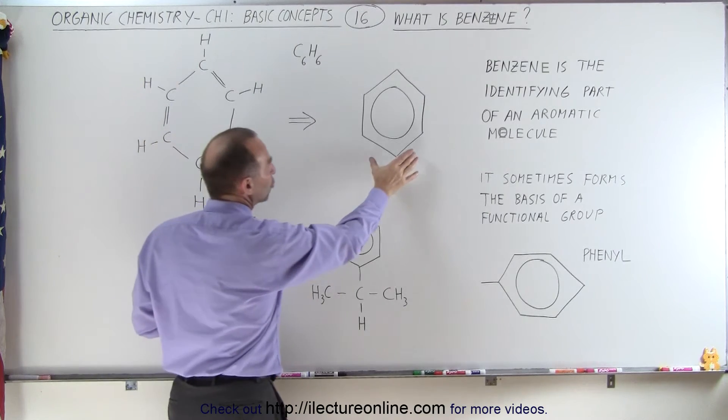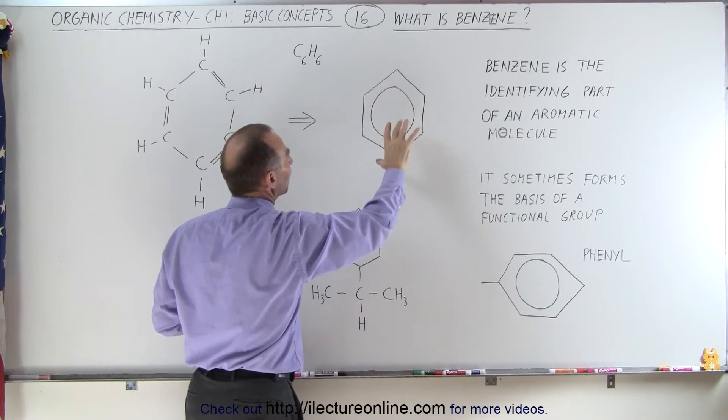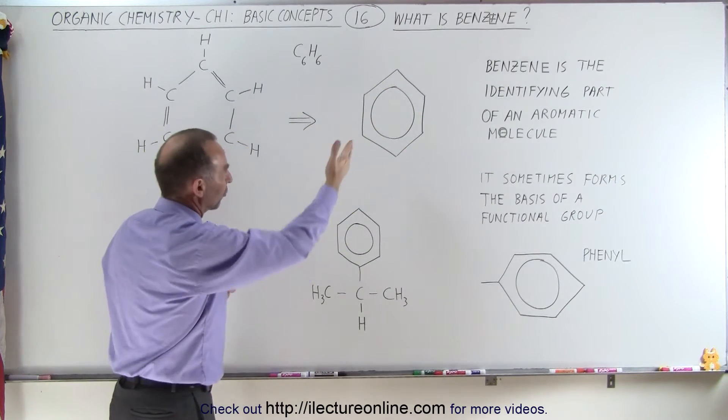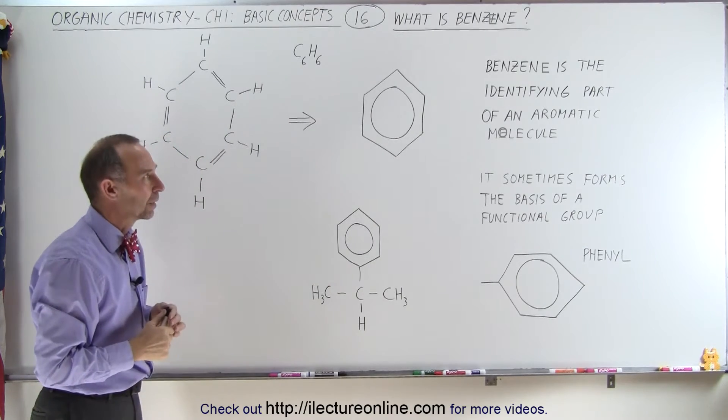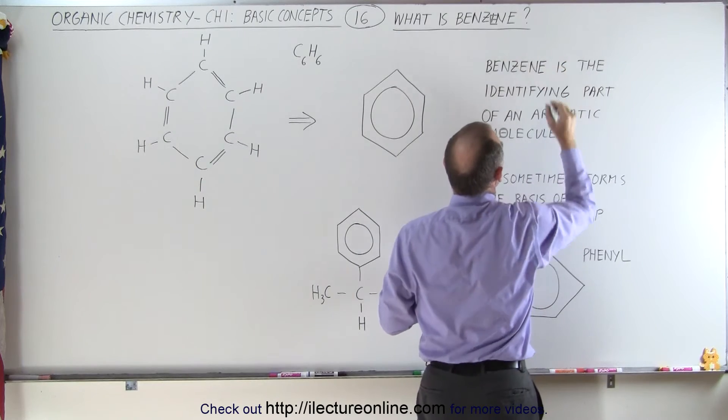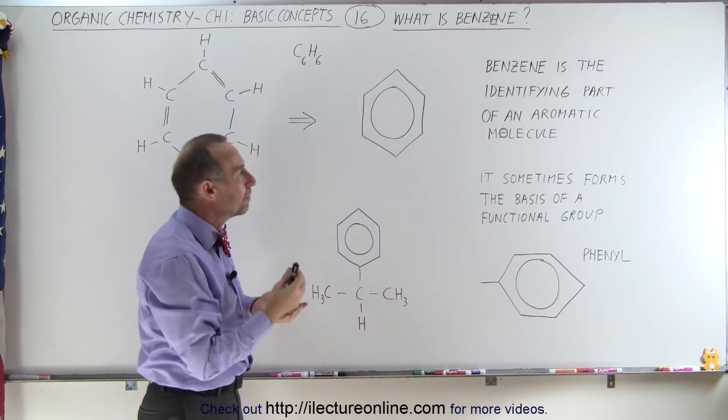An easy way to draw benzene is simply draw a hexagon with a circle inside. This indicates that it's the benzene molecule, which is easier to draw like that. Benzene is the identifying part of an aromatic molecule.